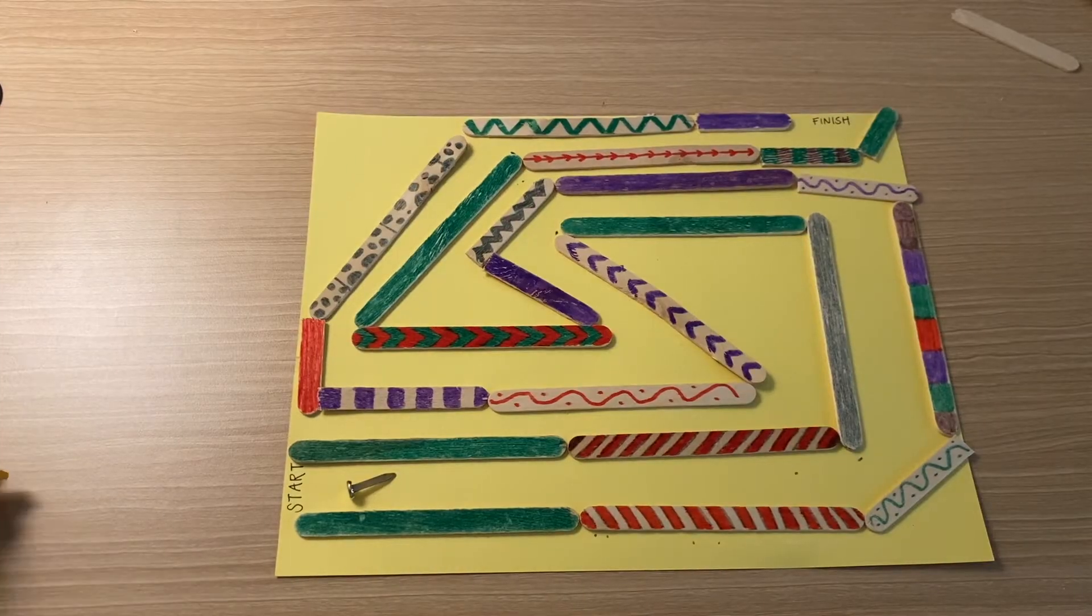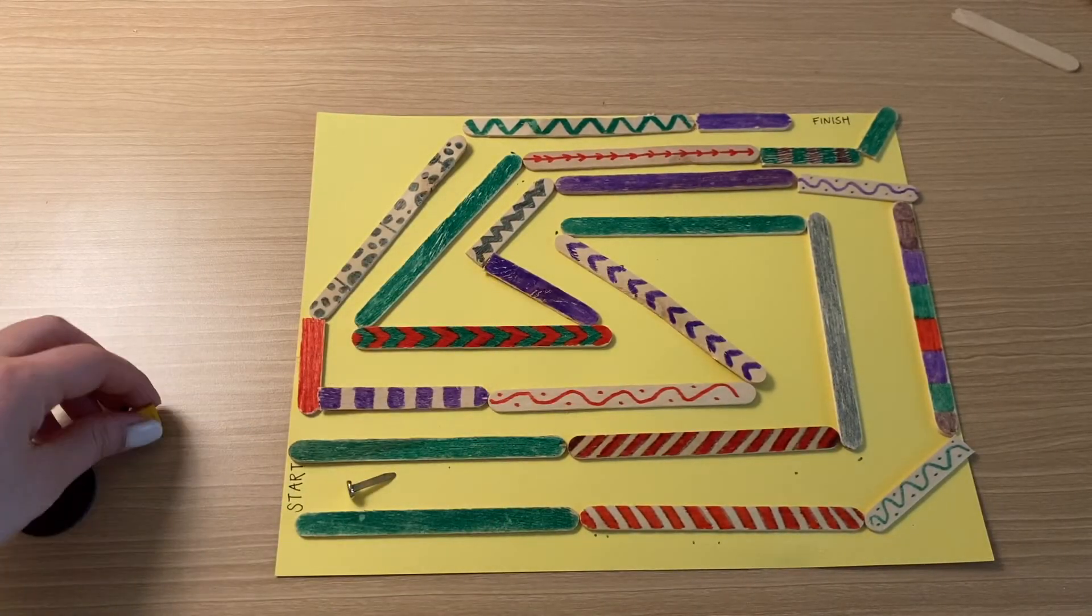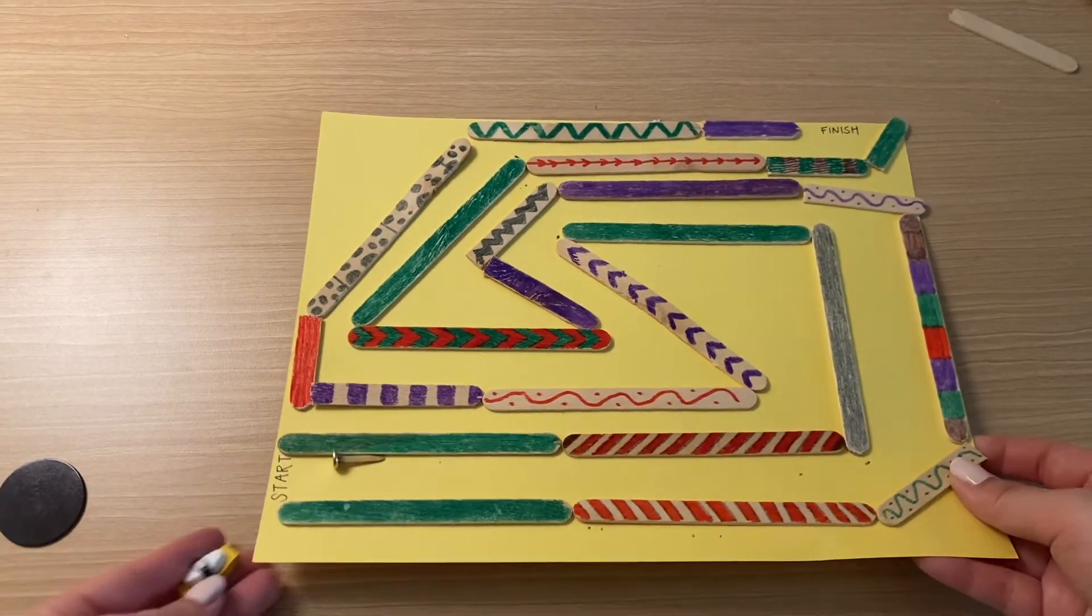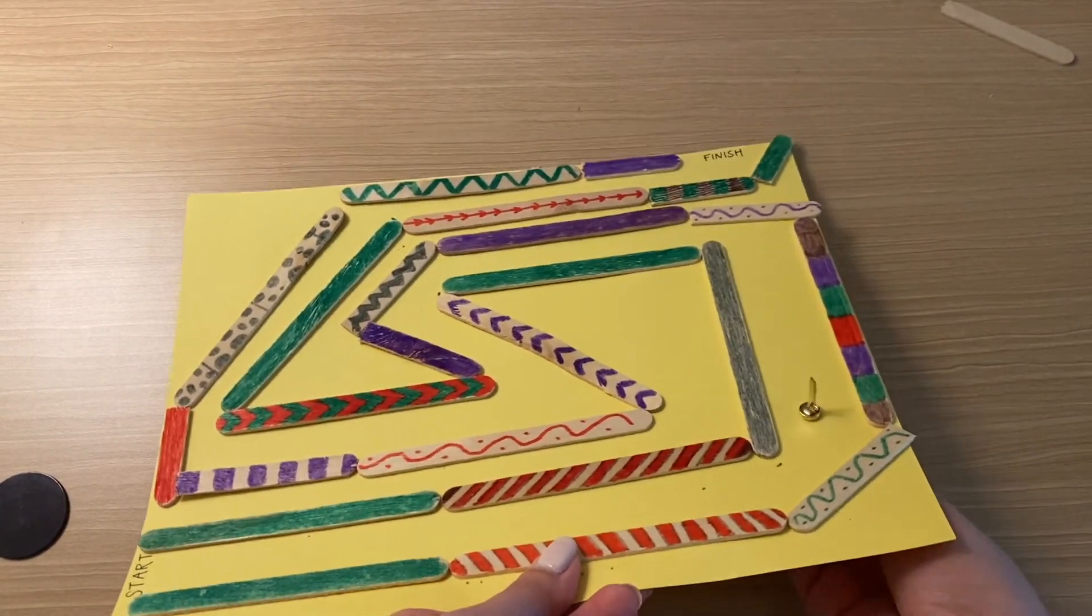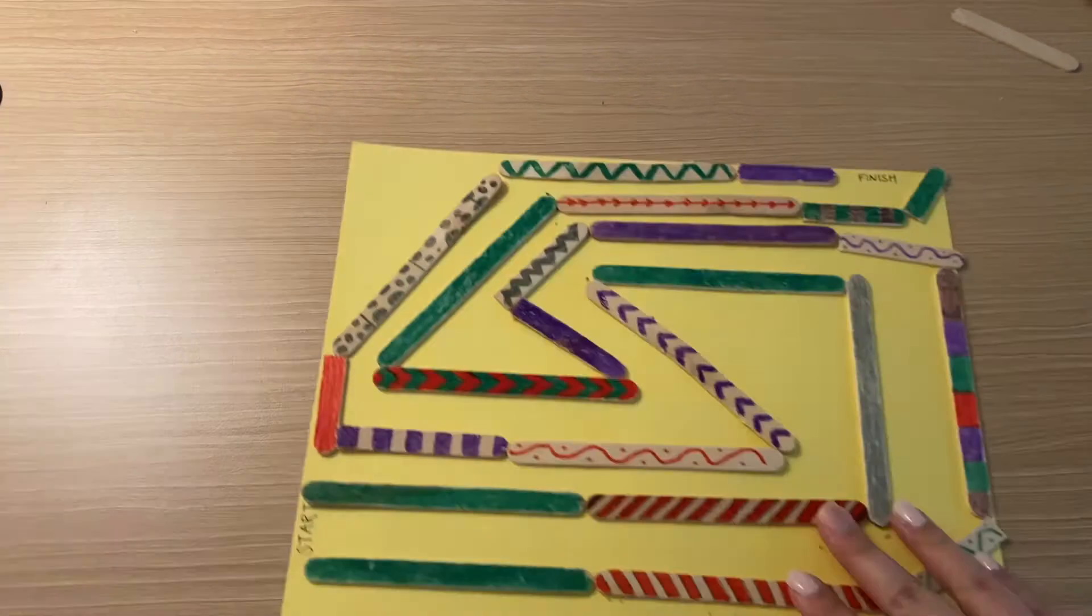Place the paper fastener at the start point and place your magnet underneath the paper. Use the magnet to slide and maneuver the paper fastener through the maze to the finish line.